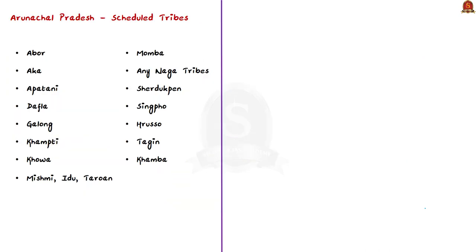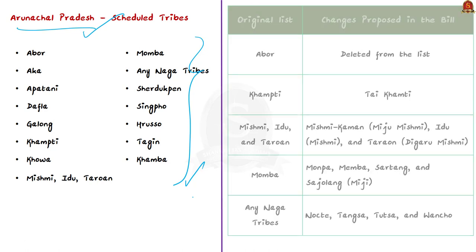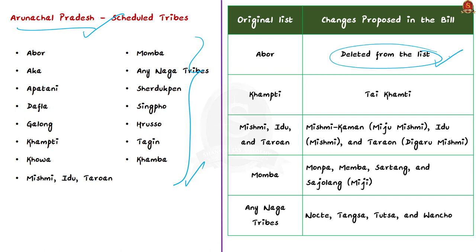This amendment seeks to change the constitutional list of scheduled tribes as recommended by the Arunachal Pradesh state, amending the list for that state. One tribe has been removed from the scheduled tribes list of Arunachal Pradesh. Apart from that, the bill also seeks to replace certain tribes in the original list. For example, the Kamthi tribe has been replaced by the Thai Kamthi tribe, and in place of any Naga tribes, the bill proposes to mention Nokte, Tangsa, Tutsa, and Wancho tribes. All these tribes belong to the state of Arunachal Pradesh.